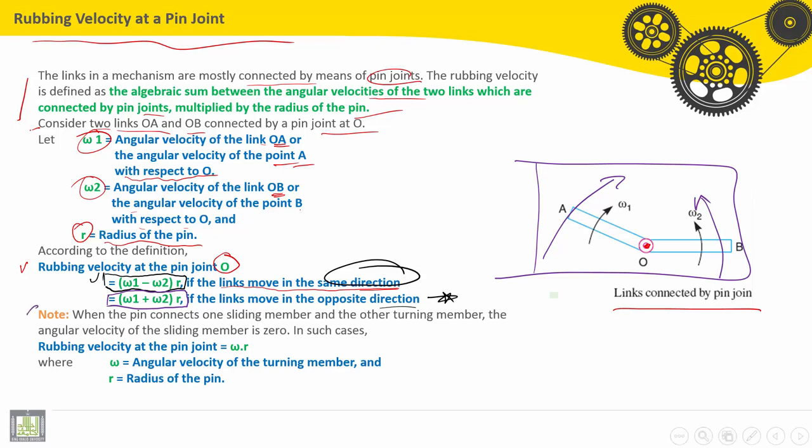Note: when the pin connects one sliding member and the other turning member, the angular velocity of the sliding member is zero. In such case, rubbing velocity at the pin joint is equal to omega R, because we have only one angular velocity for one member making rotation, where omega is the angular velocity of the turning or rotating member, and R is the radius of the pin.